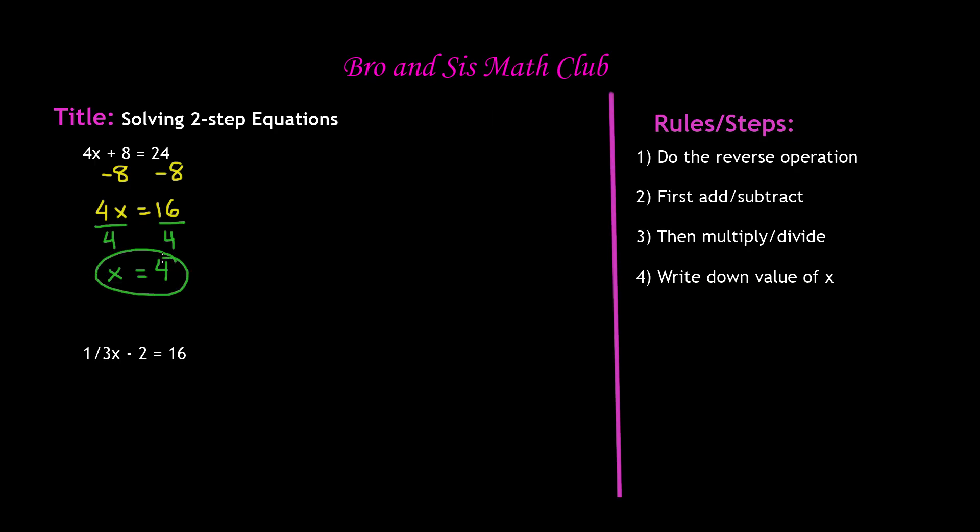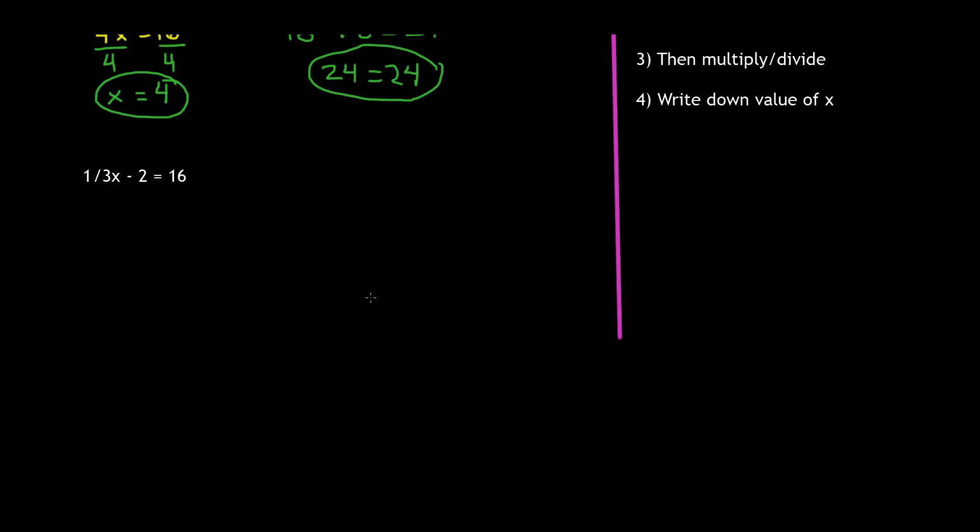Now if we want to check our answer, we can always substitute the value. So 4 and then substitute the x for 4, which is the value of 4, plus 8 is equal to 24. 4 times 4 is 16, plus 8 is equal to 24. And we know that 16 plus 8 is 24, which is equal to 24. So therefore, our answer is correct. So now, moving on to our next example.